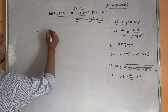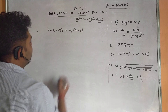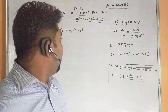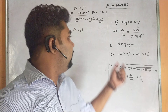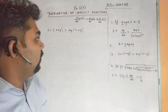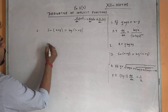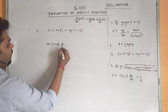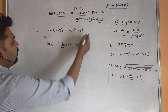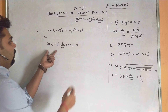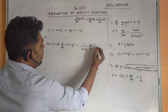Question 3: sin(x + y) = log(x + y). Differentiating both sides with respect to x: d/dx[sin(x + y)] = cos(x + y)·d/dx(x + y), and d/dx[log(x + y)] = 1/(x + y)·d/dx(x + y). So: cos(x + y)·(1 + dy/dx) = (1/(x + y))·(1 + dy/dx).